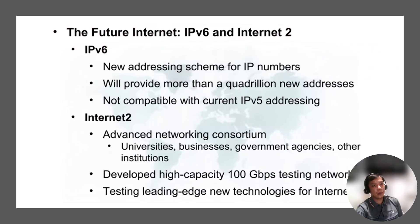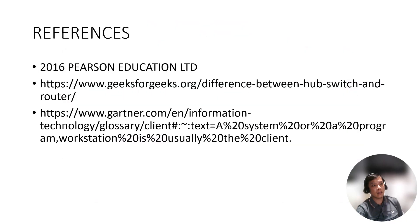The future internet: IPv6 and Internet 2. IPv6 is a new addressing scheme for IP numbers that will provide more than a quadrillion new addresses, but is not compatible with current IPv4 addressing. Internet 2 is an advanced networking consortium that developed a high-capacity testing network and is testing leading-edge new technologies for the internet. And that's all for my report. Here are my references — thank you.